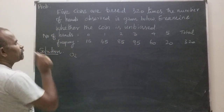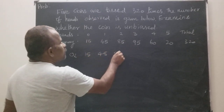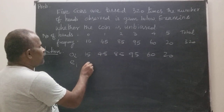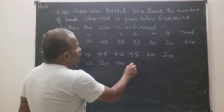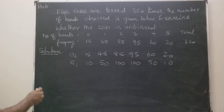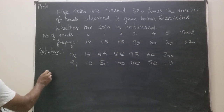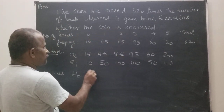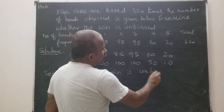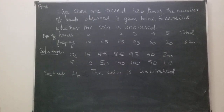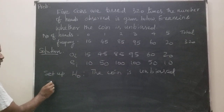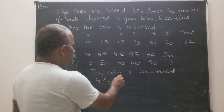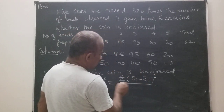So the observed frequencies OI are: 50, 45, 85, 95, 60, 20. The expected frequencies EI are: 10, 50, 100, 100, 50, 10. Now set up the null hypothesis H0: the coin is unbiased. The test statistic is chi-squared = Σ (OI − EI)² / EI.